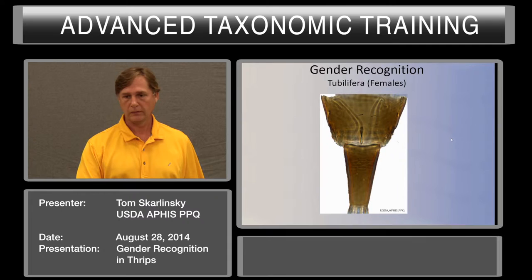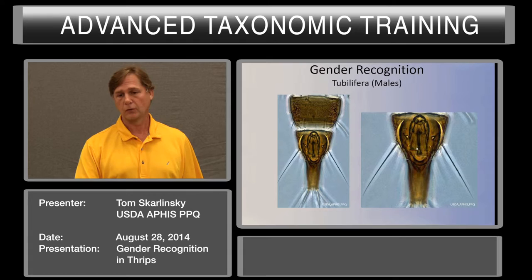In the Tubulifera males, you have the ediagus again for the boys — it's here. You also notice on the sides there are areas that separate this sclerotized region, so the whole area will open up.